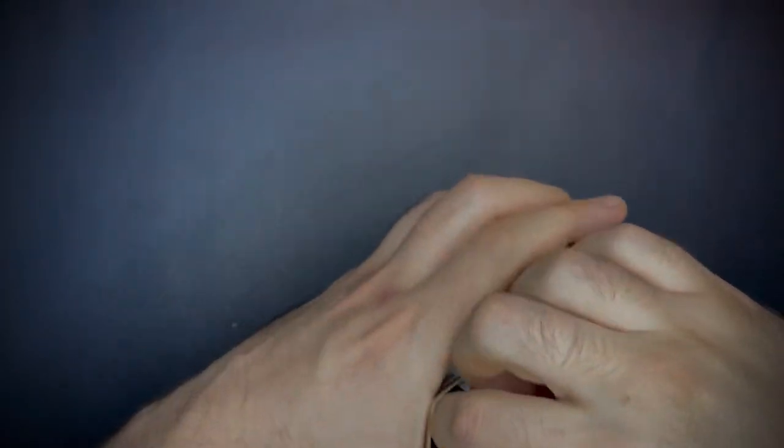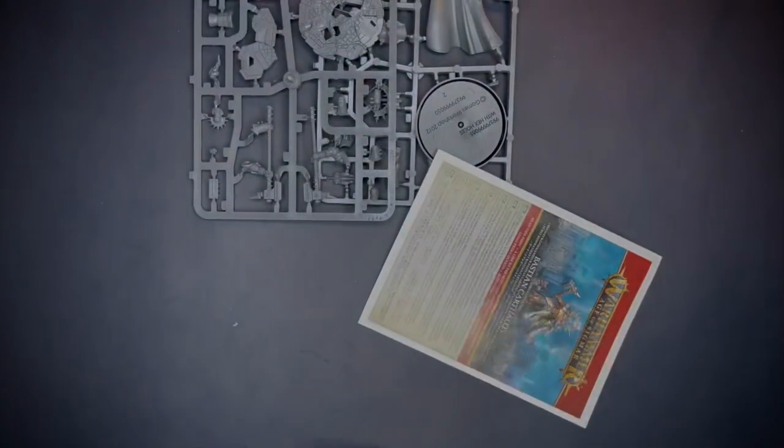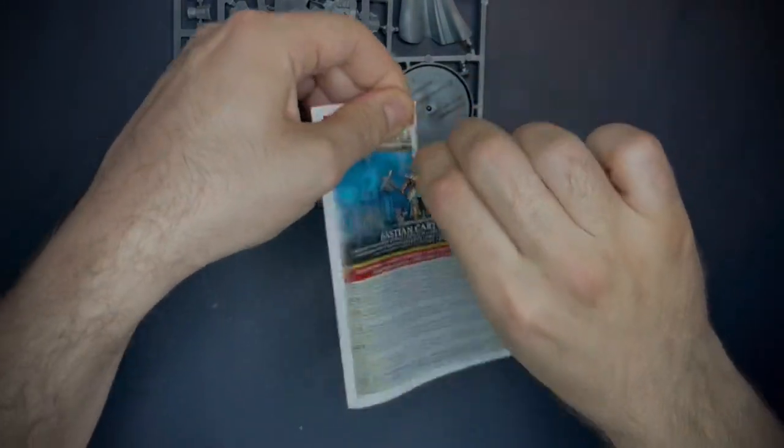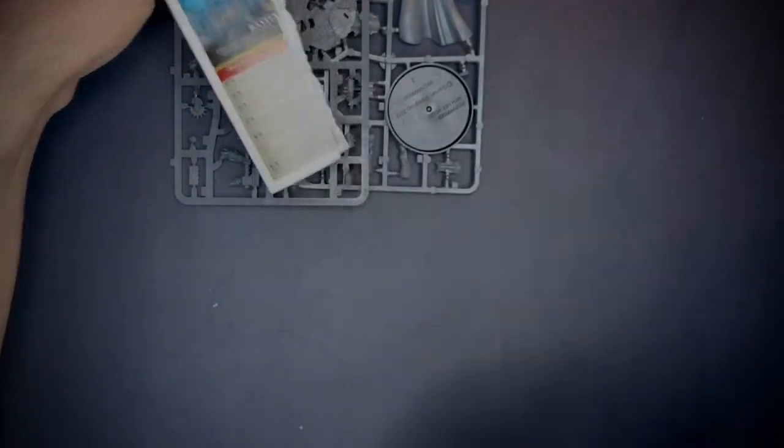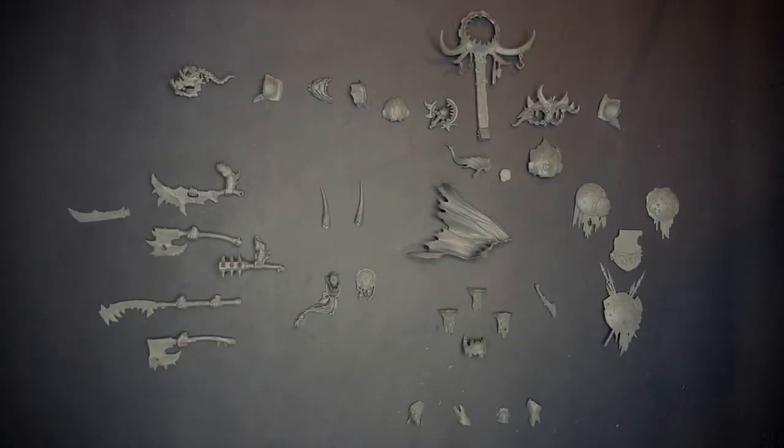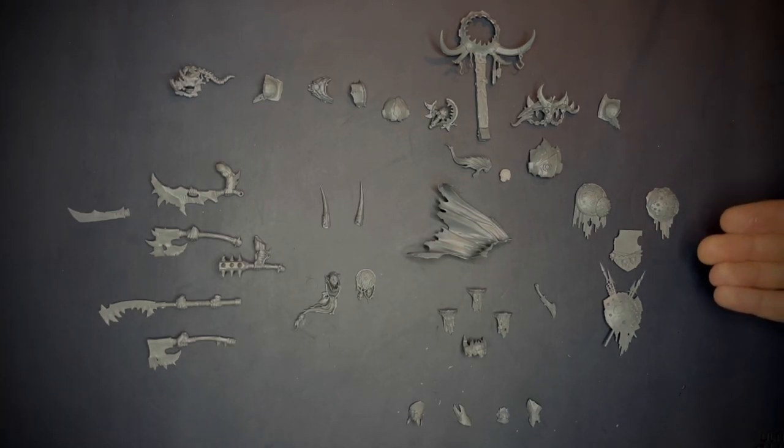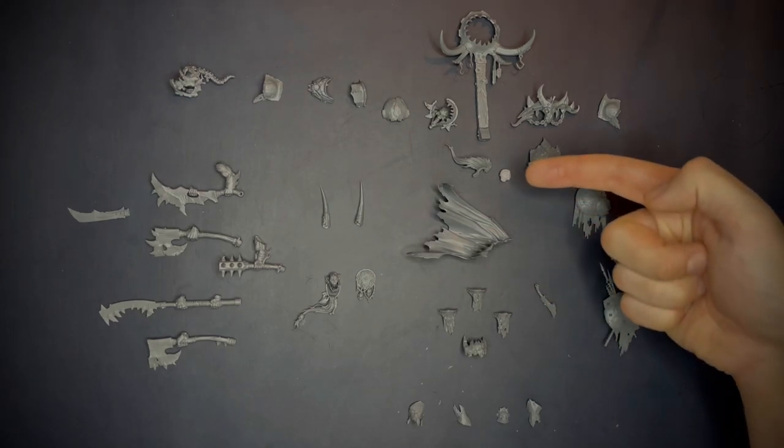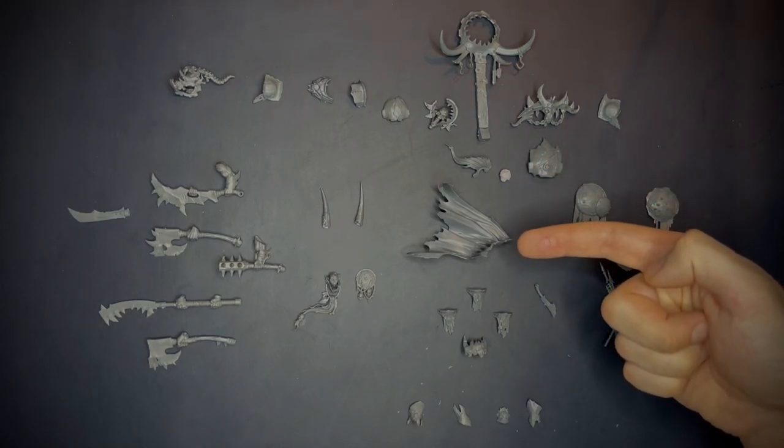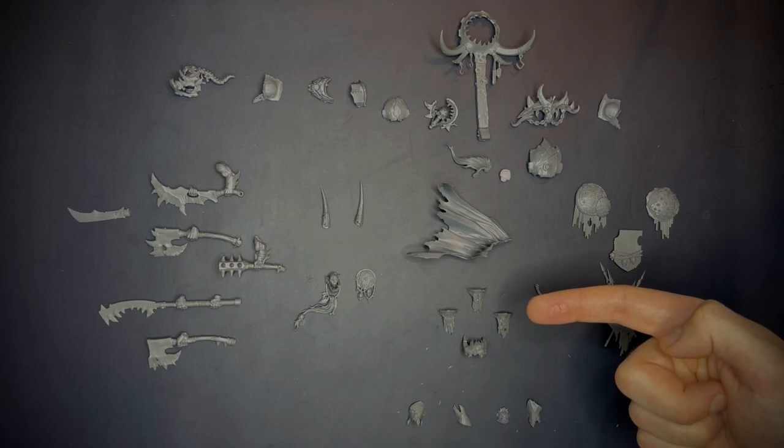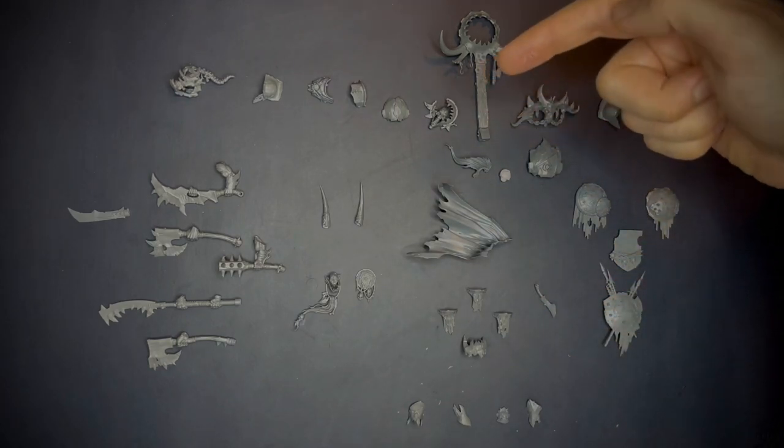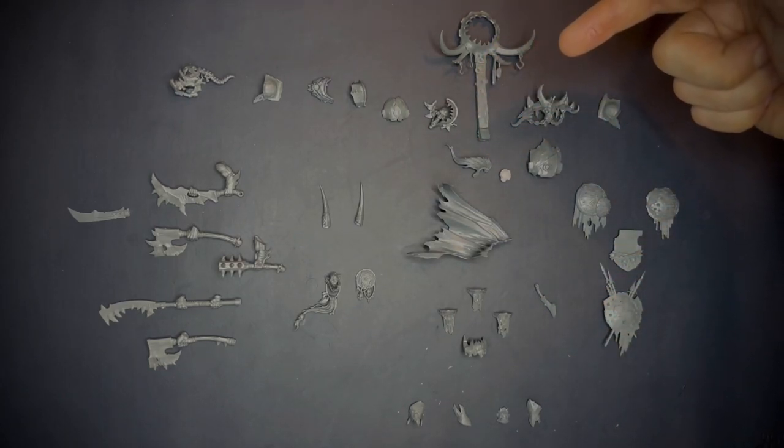So first off we're going to carefully remove the sprues from the packaging and then once that's out we're going to thoroughly read the instructions before continuing. Here I have all the potential parts I'm going to be using for this conversion. I've got some shoulder pads up here, I've got some weapons there, lots of them. On the other side we've got some shields, then we've got the head we're going to use, Archeon's cape, some fancy belts and some braces. I've got some back banners we might use, ready to go.